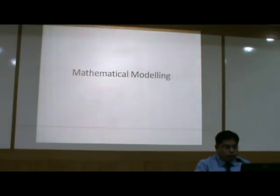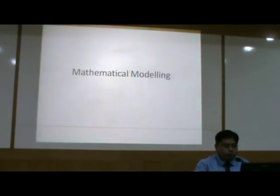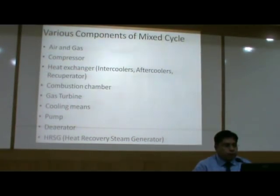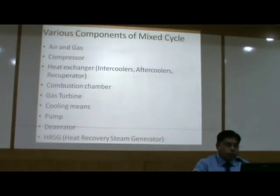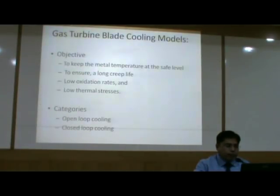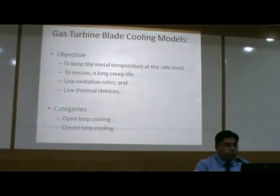To evaluate the performance of the mixed gas turbine cycle, mathematical modeling of the various components was done. The components include: air and gas compressor, heat exchangers like intercoolers, aftercoolers, and recuperators, combustion chamber, gas turbine, cooling means, pump, deaerator, and heat recovery steam generator. Mathematical modeling of all these components was performed in order to analyze the performance of the mixed cycle.